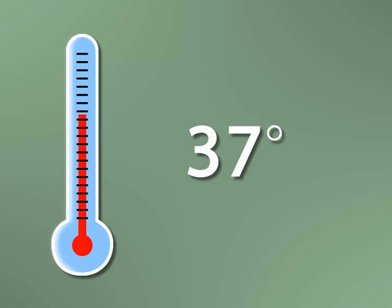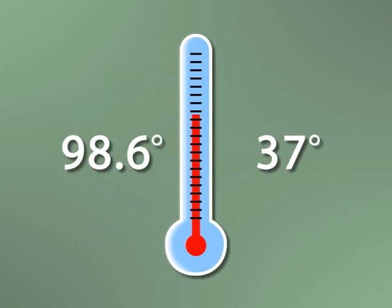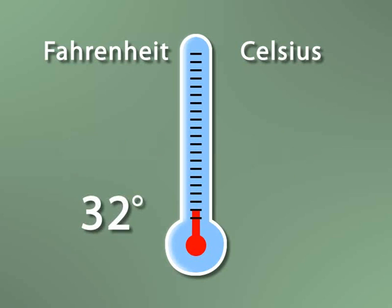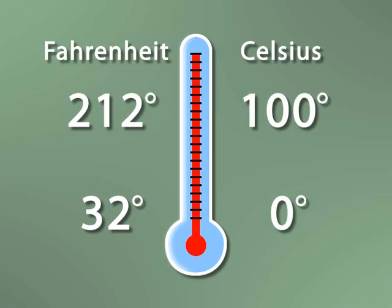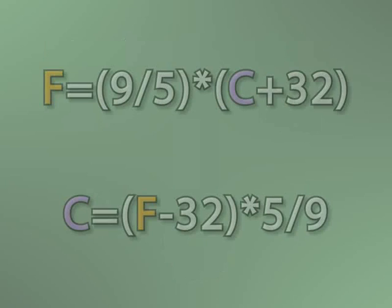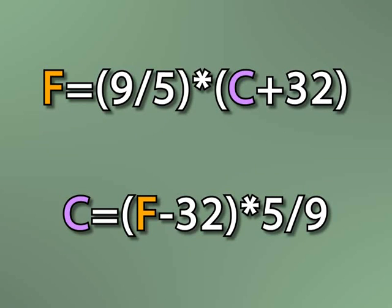But 37 degrees seems pretty cold for a healthy human being. The reason the numbers are so different is because in the United States we use a different system of measurement for temperature — the US uses Fahrenheit and pretty much the rest of the world uses Celsius. On the Fahrenheit scale, water freezes at 32 degrees and boils at 212, whereas in Celsius, water freezes at 0 degrees and boils at 100. The actual amount of heat is the same, but the numbers differ because we use a different range of values. And there are mathematical formulae you can use to convert Fahrenheit to Celsius and vice versa.